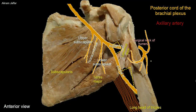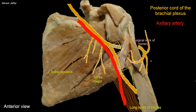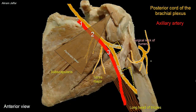Now I will superimpose the axillary artery. The posterior cord of the brachial plexus is called posterior because it lies posterior to the second part of the axillary artery. The axillary artery begins at the outer border of the first rib as the continuation of the subclavian artery, and ends by becoming the brachial artery at the lower border of teres major muscle. For descriptive purposes, it is divided into three parts by pectoralis minor muscle, a triangular muscle attached to the coracoid process of the scapula. The third part of the axillary artery, which lies lateral to pectoralis minor, has three branches.